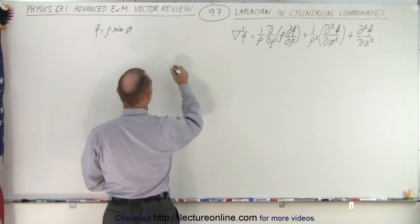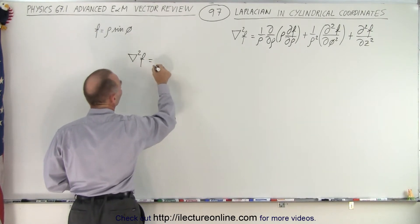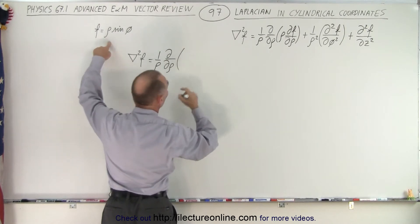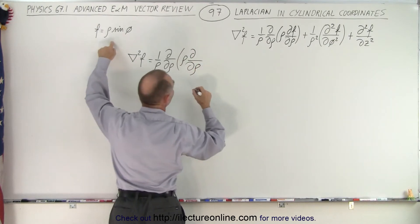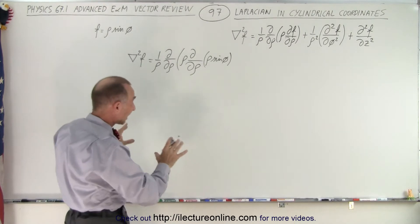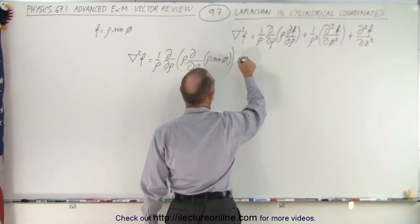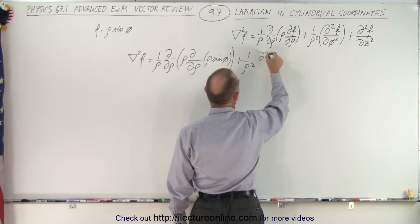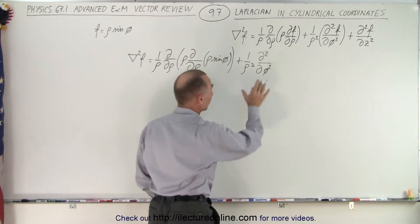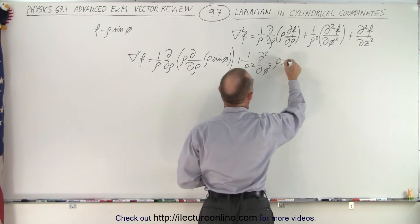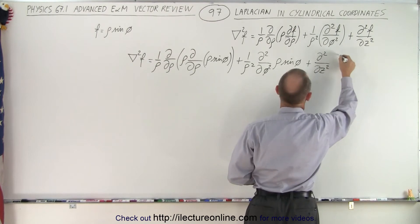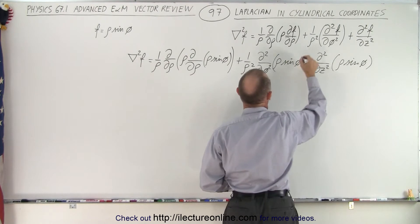The Laplacian of the scalar function is equal to 1 over rho times the partial derivative with respect to rho of rho times the partial derivative with respect to rho of our scalar function, which is rho times the sine of phi. Sometimes we get lost in all that, so it's better to write it out. We also have plus 1 over rho squared times the second partial derivative with respect to phi of rho times sine of phi, plus the second partial derivative with respect to z of rho times sine of phi.